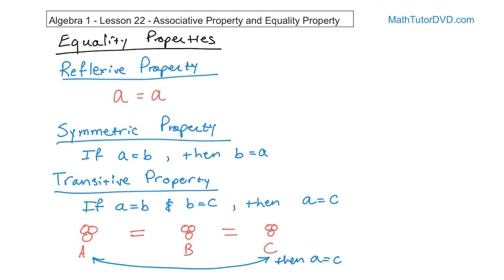So those are the three equality properties. A equals itself (reflexive). If A equals B, then B equals A (symmetric). And if A equals B and B equals C, then A equals C (transitive). You won't use these every day, but you'll be asked about them on tests, and as we build our skills forward you'll reference them in more complicated topics. Follow along to the next lesson at mathandscience.com.